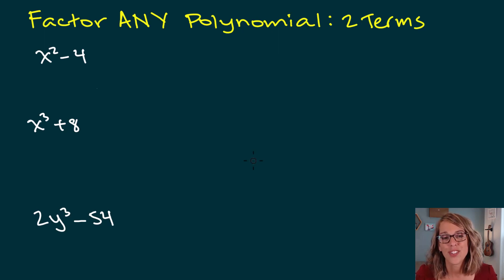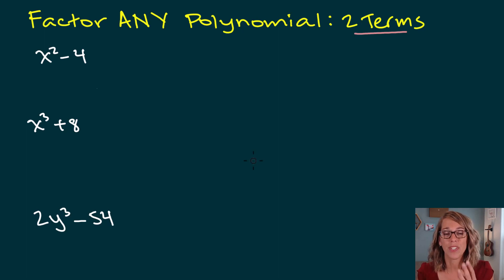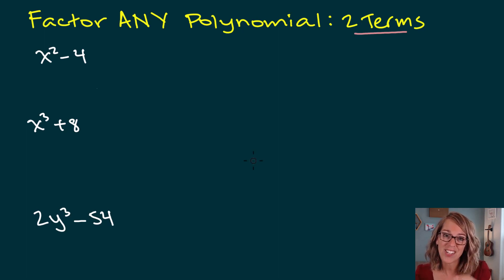When you're trying to figure out which strategy to use to factor a polynomial, it's kind of nice because it's based on the number of terms that you've got. We're going to start with two terms, then we'll look at three terms and four terms. Each has their own strategy.